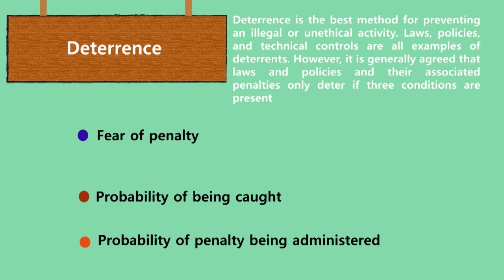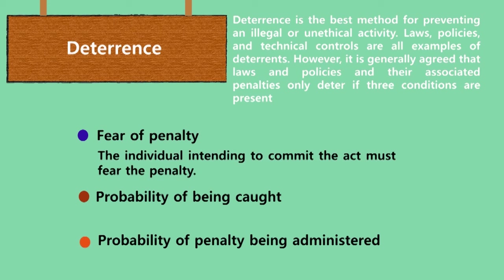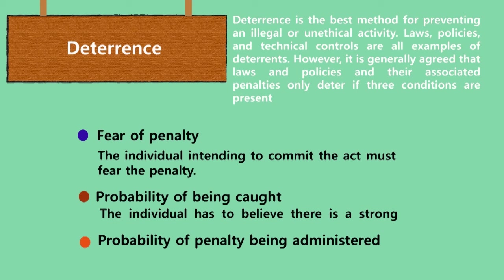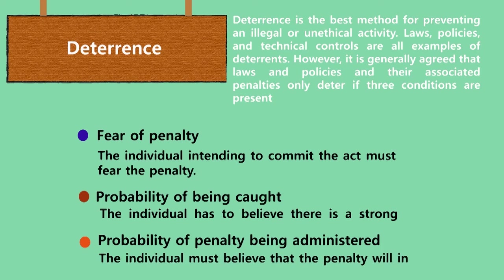Deterrence is the best method for preventing an illegal or unethical activity. Laws, policies, and technical controls are all examples of deterrence. However, it is generally agreed that laws and policies and their associated penalties only deter if three conditions are present: fear of penalty, probability of being caught, and probability of penalty being administered.